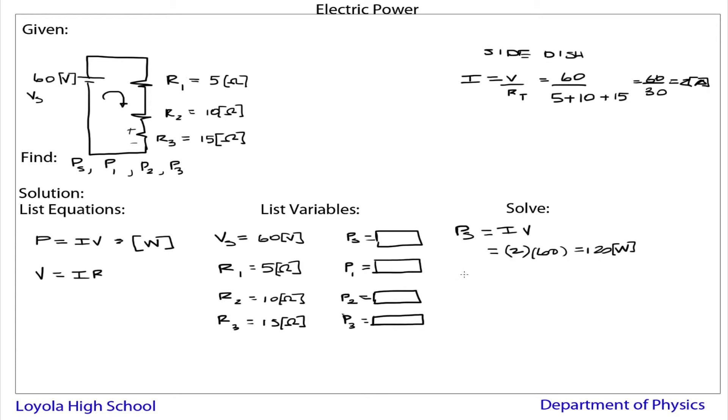Now for the first resistor, it's also IV. So it's equal to 2 times, the only problem is we don't know what voltage this is, this individual voltage. But we can find that, because we know that V1 is equal to I times R1, Ohm's Law. So this is equal to 2 times 5, because it's 5 ohms, or 10 volts. So this is 2 times 10, or 20 watts.